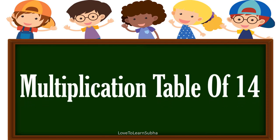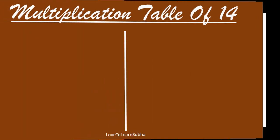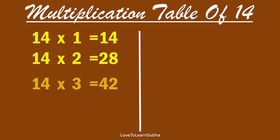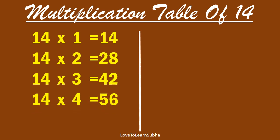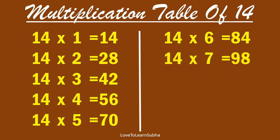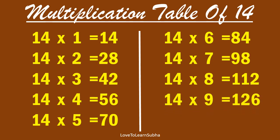Multiplication table of 14. 14×1 is 14, 14×2 is 28, 14×3 is 42, 14×4 is 56, 14×5 is 70, 14×6 is 84, 14×7 is 98, 14×8 is 112, 14×9 is 126, 14×10 is 140.